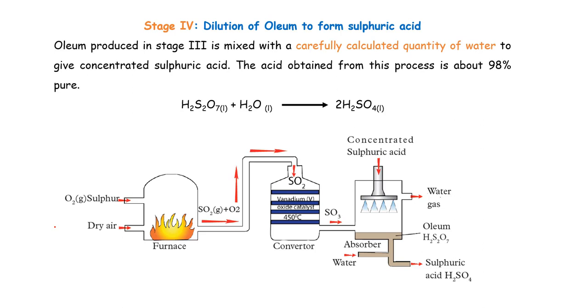Then, we have stage 4, the last stage where we have to dilute our oleum to form sulfuric acid. Obviously, in most cases dilution, it means adding water. In stage 4, we shall carefully mix our oleum with calculated quantity of water. We don't just mix for the sake. We have to calculate, know which concentration of oleum we have, which amount and what's the right proportion of water to mix with our oleum. So, once these two are mixed, we shall get our sulfuric acid. At least, it can be 98% pure.